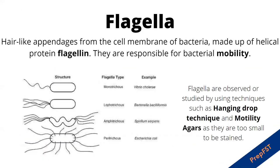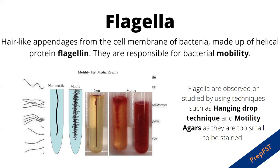Flagella are hair-like appendages from the cell membrane of bacteria, made up of a helical protein called flagellin. These structures are responsible for mobility and the movement of bacteria in liquids and semi-solids. The types of flagella are one of the frequently asked questions in all examinations, so feel free to take a screenshot for future reference. Since flagella are very thin, staining them by regular techniques is very difficult, so we use techniques such as the hanging drop technique or motility agar, where motile bacteria with flagella grow out from the stab into a feathery growth.